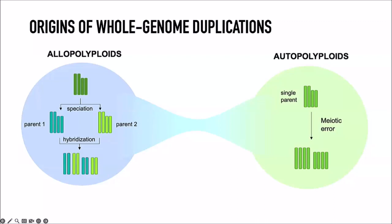The first is autopolyploidy: a single parent where something goes wrong during meiosis — chromosomes don't separate — and you end up with a tetraploid offspring. The second, well-documented especially in plants, is allopolyploidy: a genome doubling through hybridization of two different parents — two species from a common ancestor that have diverged and hybridize, with the resulting offspring doubling its genome instead of reverting to diploid. You technically get four chromosome copies, two from each parent.